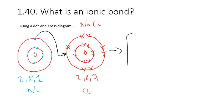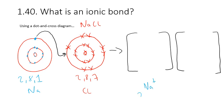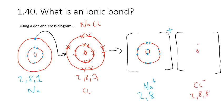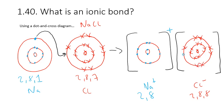Now we need to redraw them as ions to represent the bonding. The sodium has become a Na1+ ion, and its new electron configuration is 2, 8 — because that outer shell is now empty. And let's not forget the positive charge. The chloride ion is now 2, 8, 8, because it now has that one electron from the sodium atom in its outer shell, represented with a dot to show it came from the sodium. So we've now represented sodium chloride as an ionic bond.